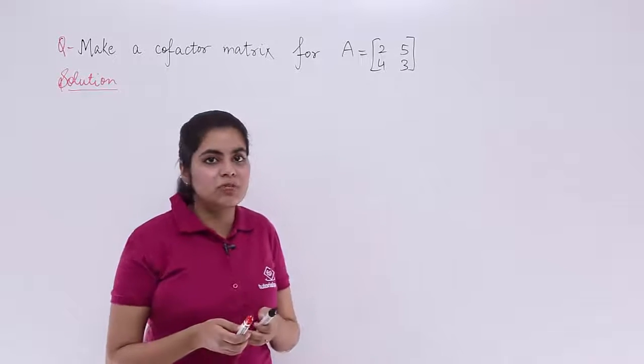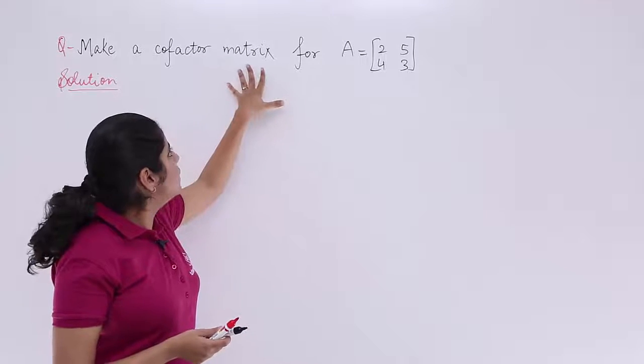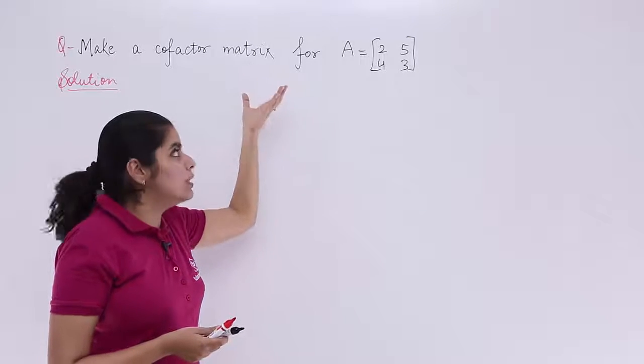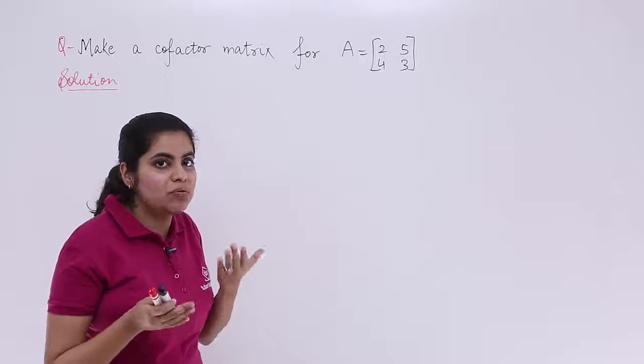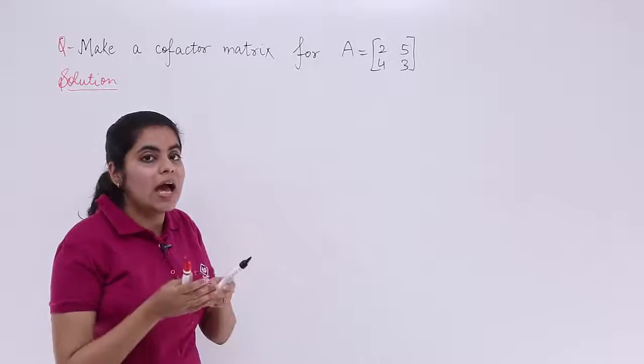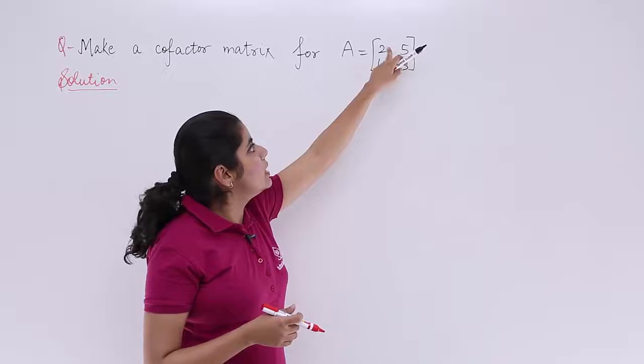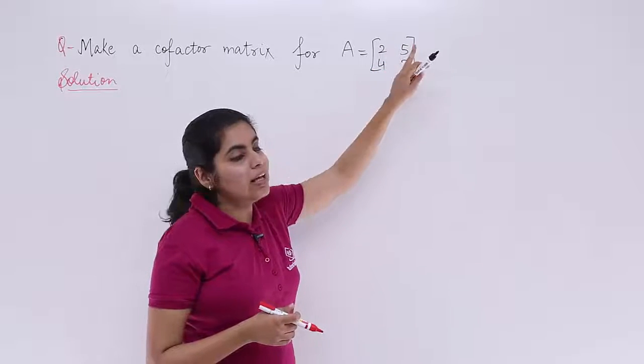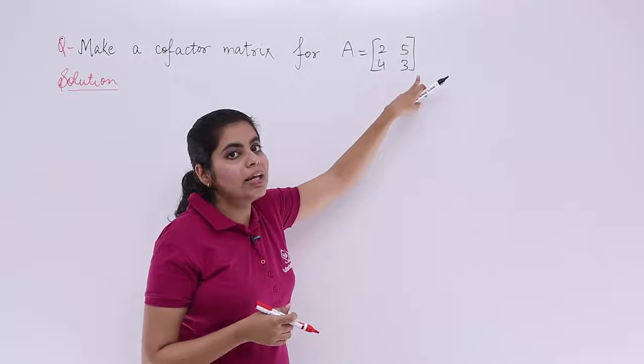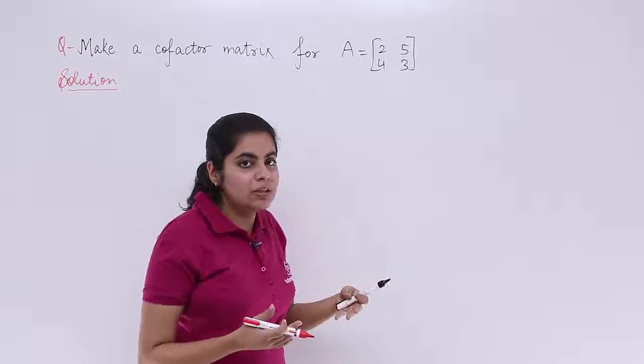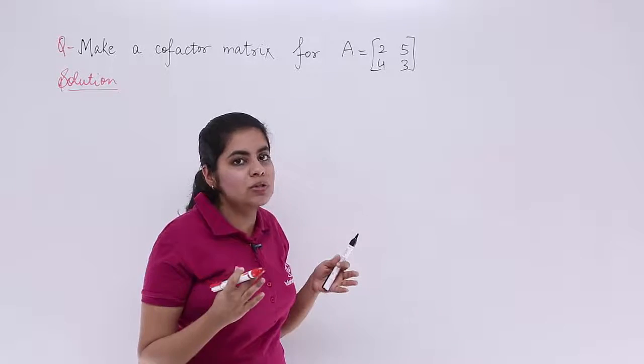As we know from the previous videos, the cofactor matrix is formed by the cofactors. And for cofactors, we need to name these elements as A11, A12, A21, A22 for our convenience. Otherwise, we can also solve it the same way.